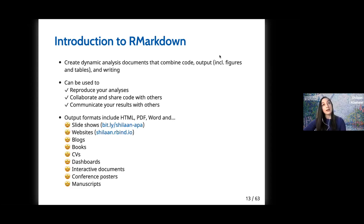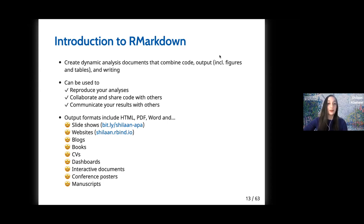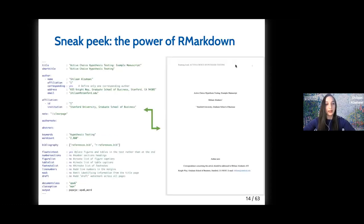R Markdown's output formats are very flexible. They include HTML, PDF, and Word, but you can also create slideshows — the slideshow you're looking at right now is created in R Markdown — as well as websites, blogs, books, your CV, dashboards, interactive documents or Shiny apps, conference posters, and of course manuscripts. When revisions require major changes to analyses, all results, figures, and tables are automatically updated.